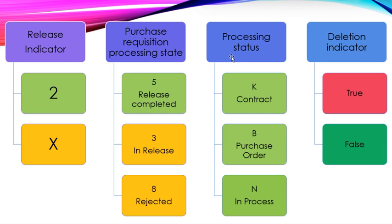Similarly, if your release indicator is X and purchase requisition processing state is 3, then it means your purchase requisition is in process, whereas if your purchase requisition processing state is 8, then it means your PR has been rejected.